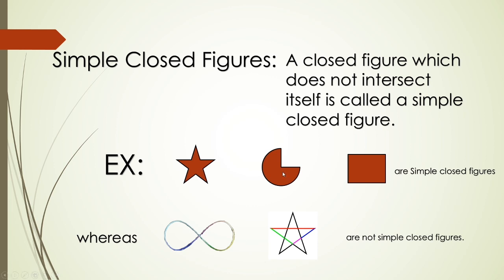Similarly, this figure — the starting point and ending point are both the same, so this is a closed figure. And it is also not intersecting itself anywhere, so this is also an example of a simple closed figure. Next, a rectangle: this is a closed figure and it is not intersecting itself anywhere, so this is also an example of a simple closed figure.